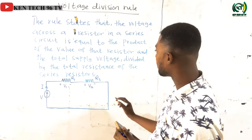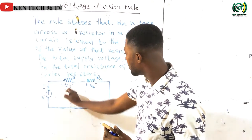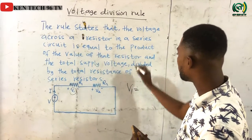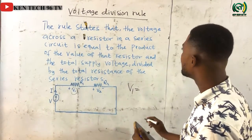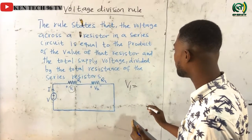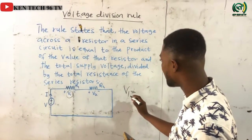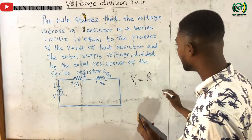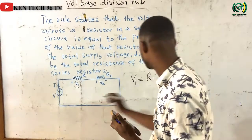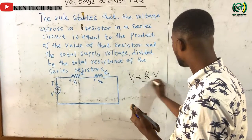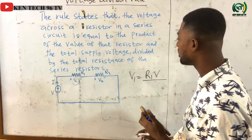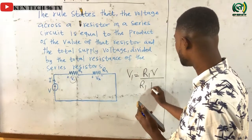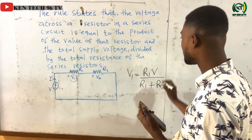The rule states that if I want to calculate V1 — the voltage across resistor R1 — V1 will be equal to the value of that resistor, R1, multiplied by the total supply voltage V, divided by the total resistance. Since R1 and R2 are connected in series, the total resistance is R1 plus R2.